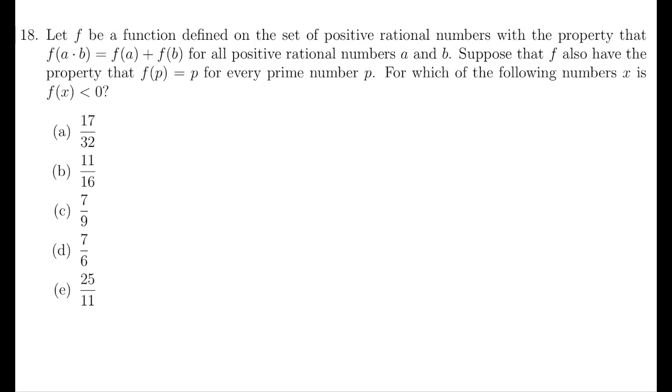Question 18. We do trial and error. For option A, consider F of 17 over 32 times 32, which equals to F of 17 over 32 plus F of 32. Left-hand side equals to F of 17.